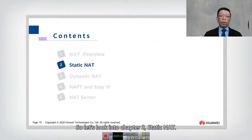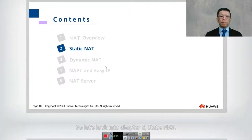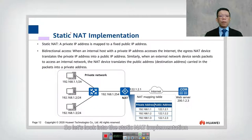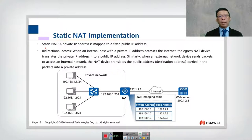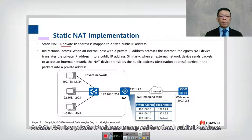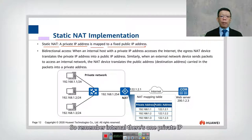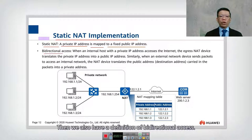Let's look into chapter two: Static NAT. The definition of static NAT is that a private IP address is mapped to a fixed public IP address. So remember, internally one private IP is mapped to externally one public IP.